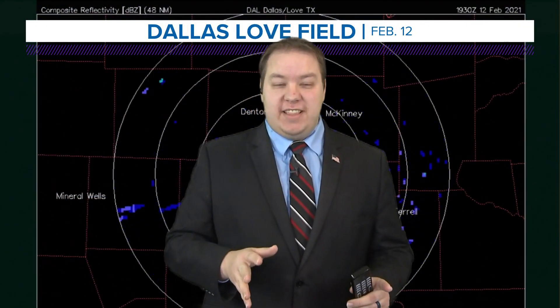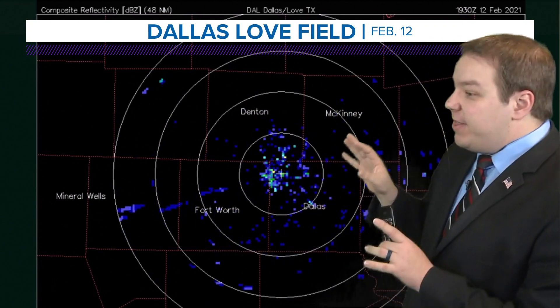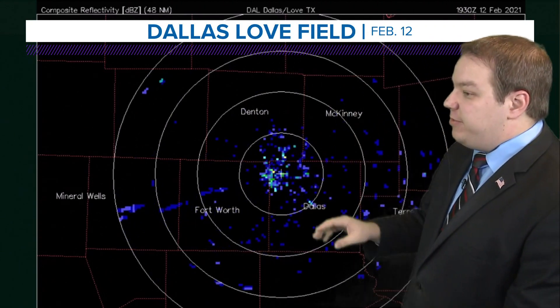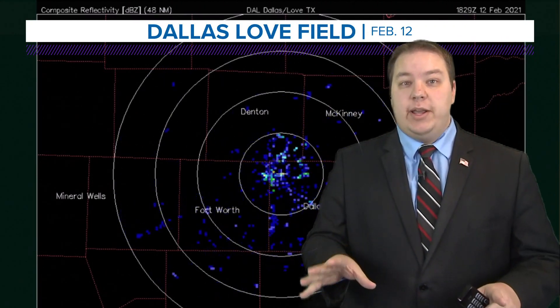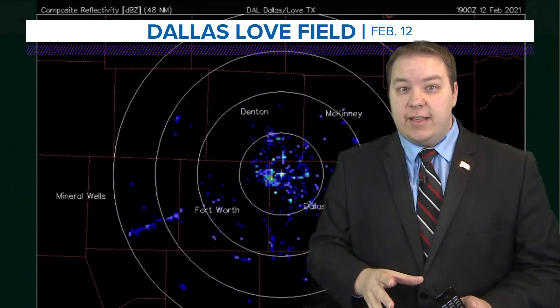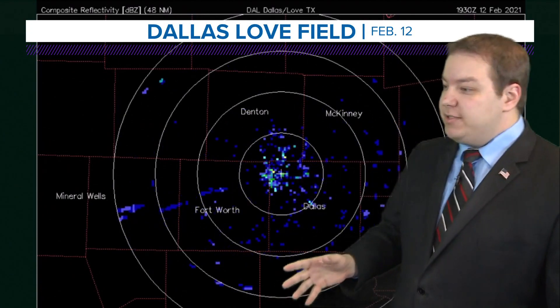This phenomenon is a little bit more in the realm of interesting than as dreadful as some of the stuff they've been seeing across the region. This was on February 12th across the region. This is the radar view from Dallas Love Field. They had a little bit of light lake effect snow going on — smaller lakes down there, but of course not frozen. So that was happening.